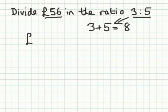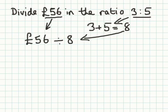So the next thing I do is I take my £56, which comes from that amount there. I divide it by 8, which has come from there. And I know 56 divided by 8 is 7.